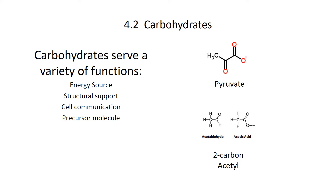When carbohydrates are broken down, they're broken down into much smaller molecules. Two of them are pyruvate and some type of acetyl — which is acetyl aldehyde or acetic acid. These precursor molecules are incredibly important. They are at the basis of our entire cellular metabolism. In fact, we can make fats, carbohydrates, and nucleotides using these smaller breakdown products of sugars. So pyruvate, acetyl aldehyde, acetic acid — whenever we break down sugars, these are intermediates. They're shuttled off from the catabolic reactions into anabolic reactions to make numerous other molecules inside our body.